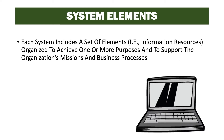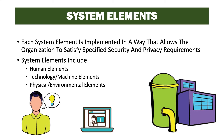Each system includes a set of elements or information resources organized to achieve one or more purposes and to support the organization's mission and its business processes. Each system element is implemented in a way that allows the organization to satisfy specified security and privacy requirements. System elements include human elements, technology or machine elements, and physical and environmental elements.